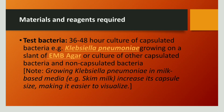Now we will discuss the materials and reagents required for capsule staining. We require a test bacteria that is a 36 to 48 hour culture of capsulated bacteria. For example, if we are taking Klebsiella pneumoniae, we grow it on a slant of EMB agar. Alternatively, we can grow Klebsiella pneumoniae in milk-based media to increase the capsule size, making it easier to visualize. So growing it in milk-based media is the preferred alternative method.